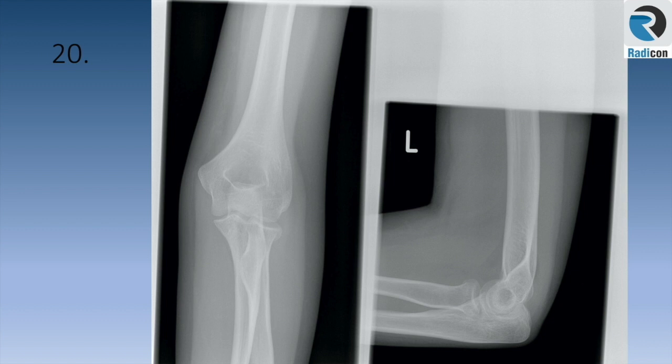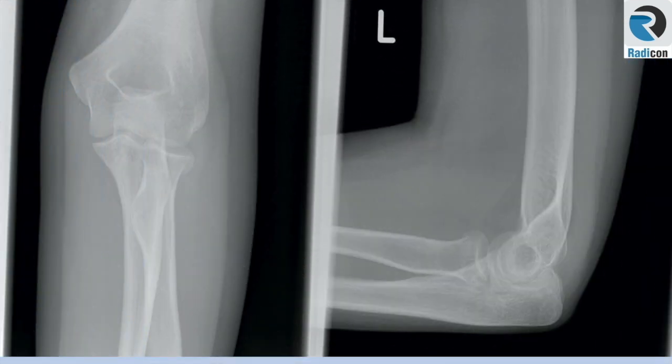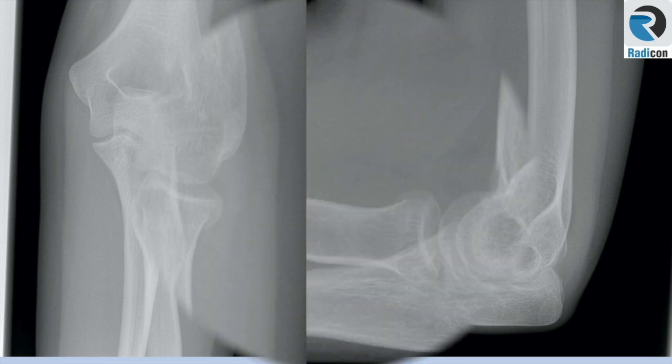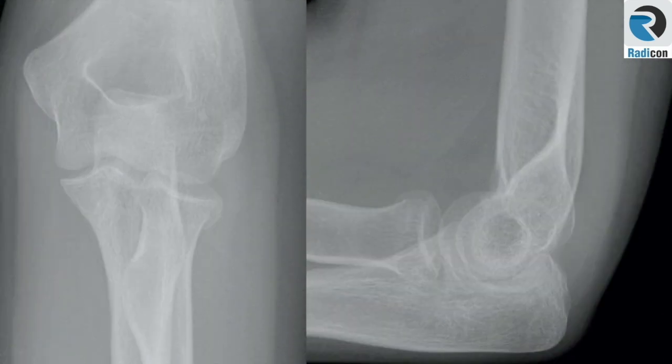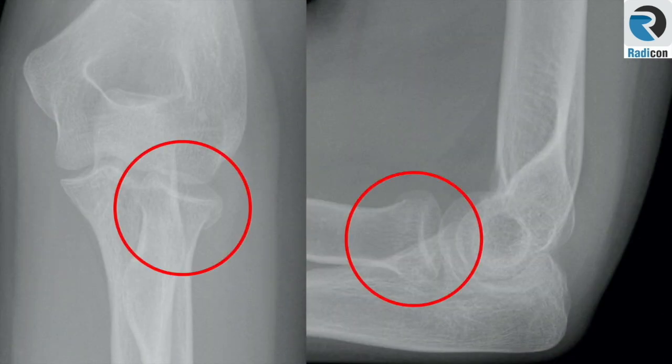Case 20: AP and lateral views of left elbow. On zooming, there is joint effusion present with prominent displaced anterior and posterior fat pads. This suggests expansion of the joint capsule due to haemarthrosis and a fracture. Radial head fractures can be very subtle and you may have to use maximum zoom. These may be seen on AP or lateral views.